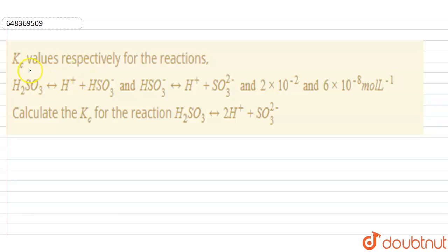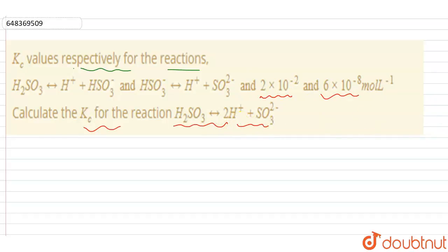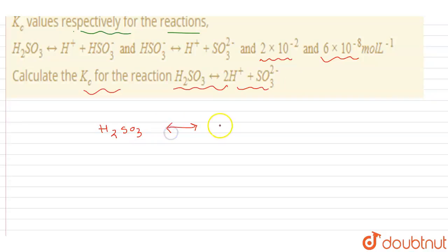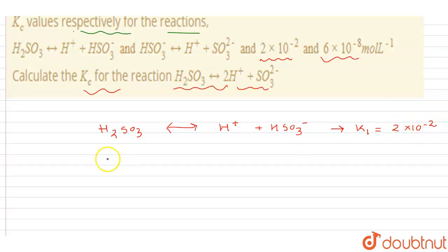The Kc values respectively: the first reaction where H₂SO₃ gives rise to H⁺ and HSO₃⁻, and the second where HSO₃⁻ gives rise to H⁺ and SO₃²⁻, are 2×10⁻² and 6×10⁻⁸ respectively.